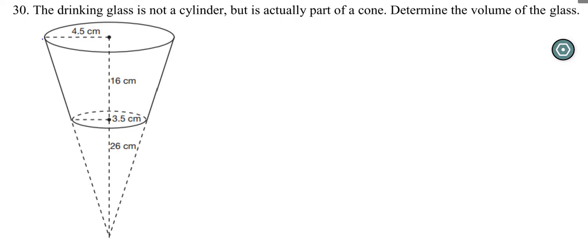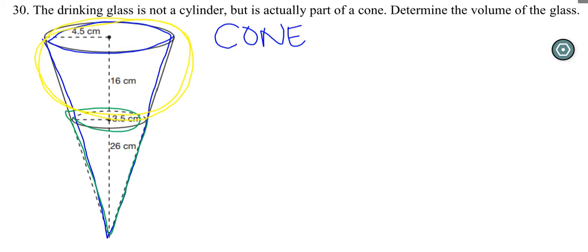So we have the big cone right here, and we have this mini cone right here. And what we really want to find out is this volume, just of this part. So we're going to need to do the big cone, and then we're going to have to subtract the half cone. And that will give us the drinking glass.